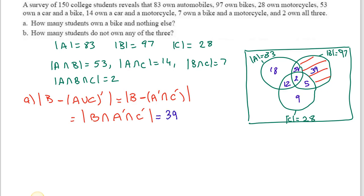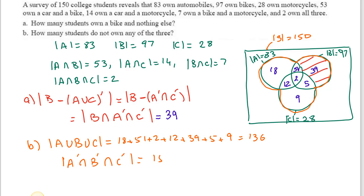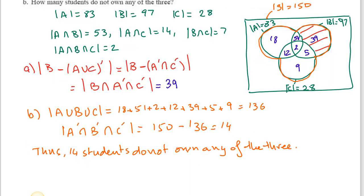The next question asks how many students do not own any of the three vehicles. Adding all regions gives |A∪B∪C| = 136. Since 150 students were surveyed, the number who own none of the three is 150 − 136 = 14 students do not own any of the three vehicles.